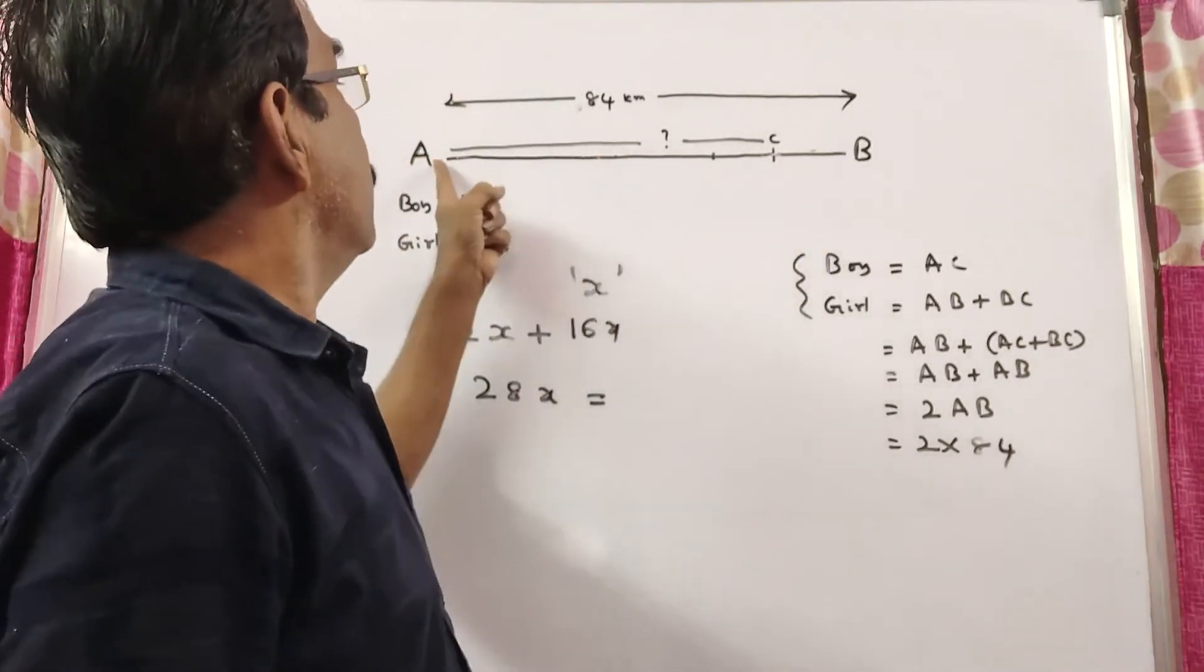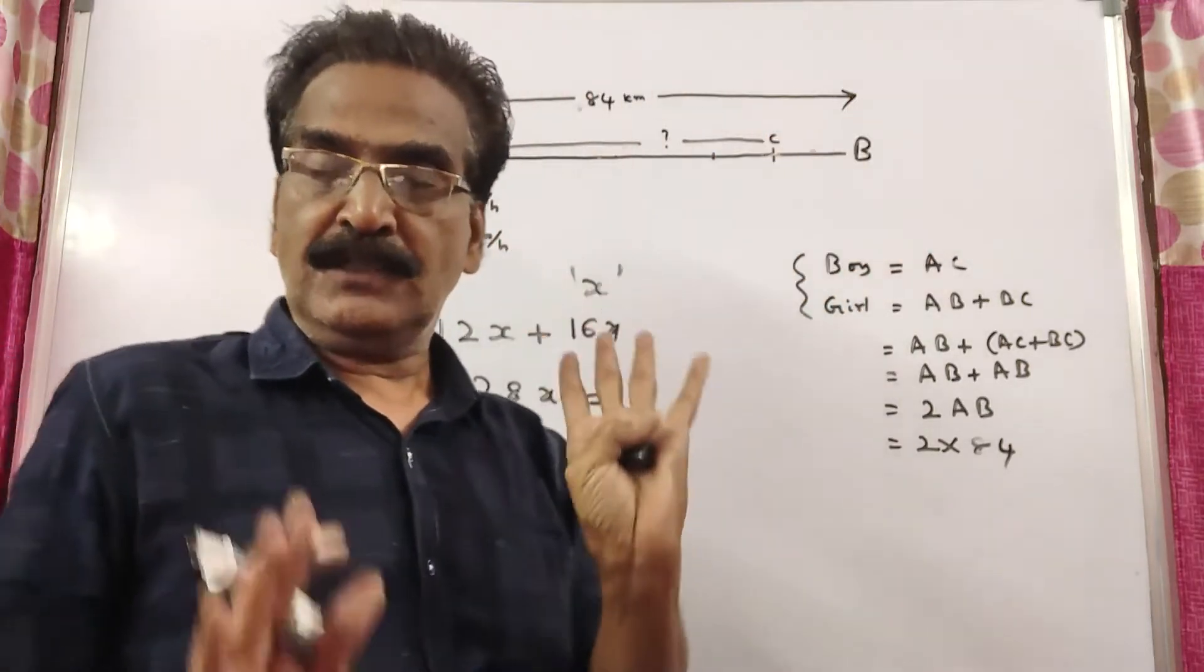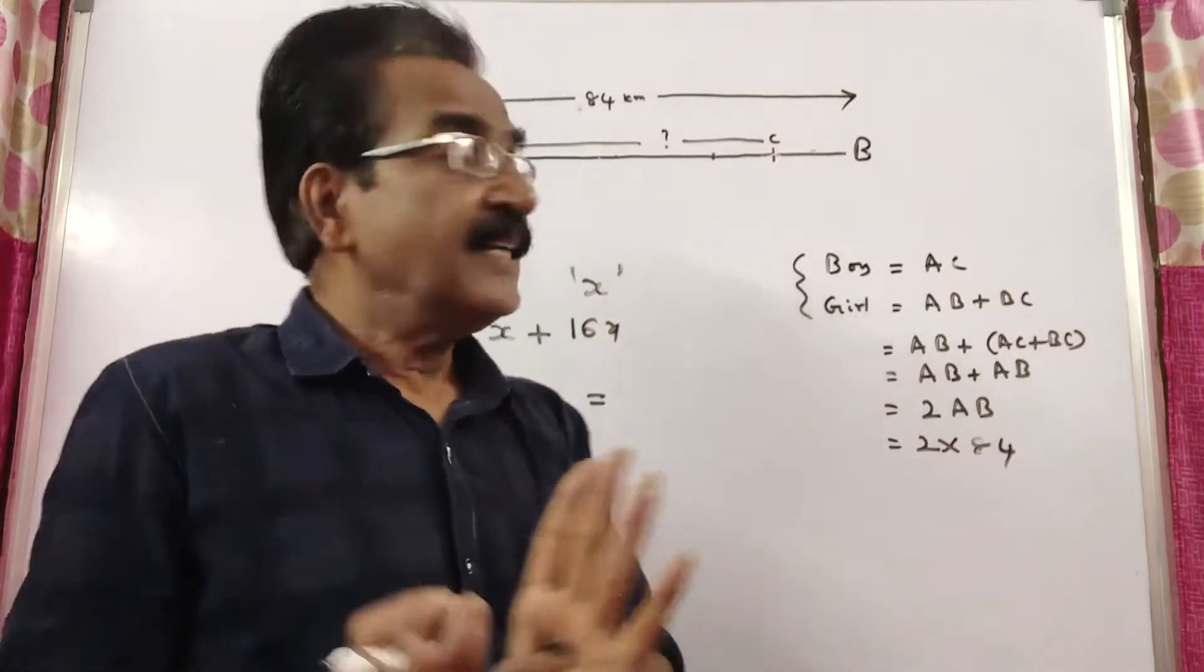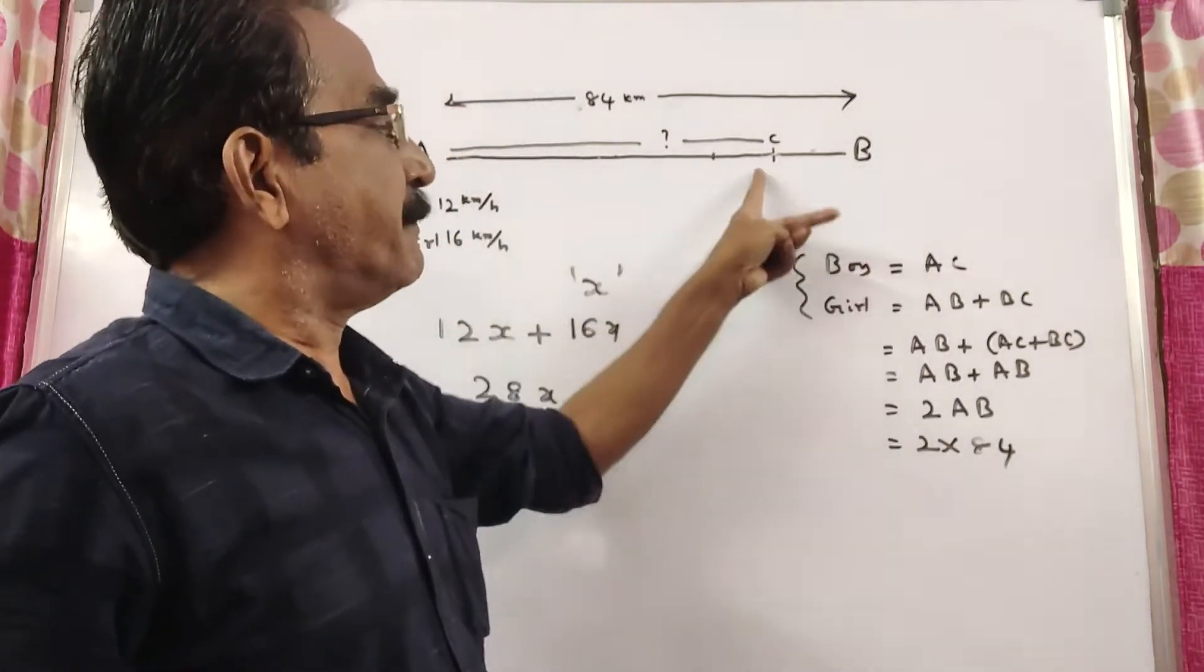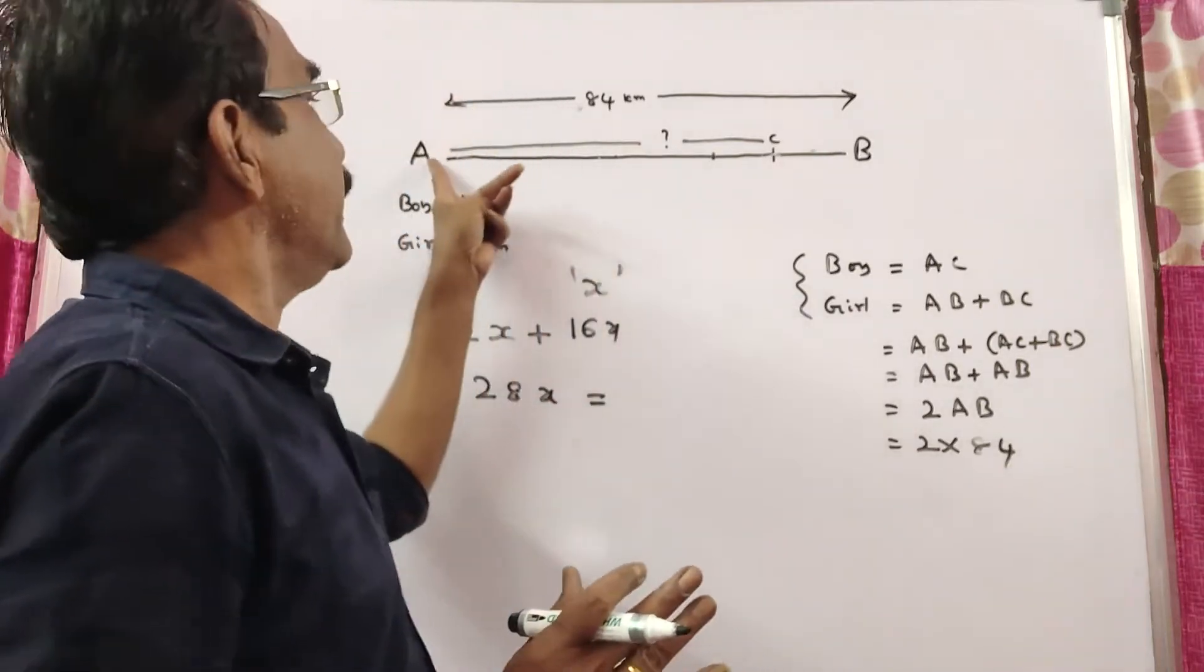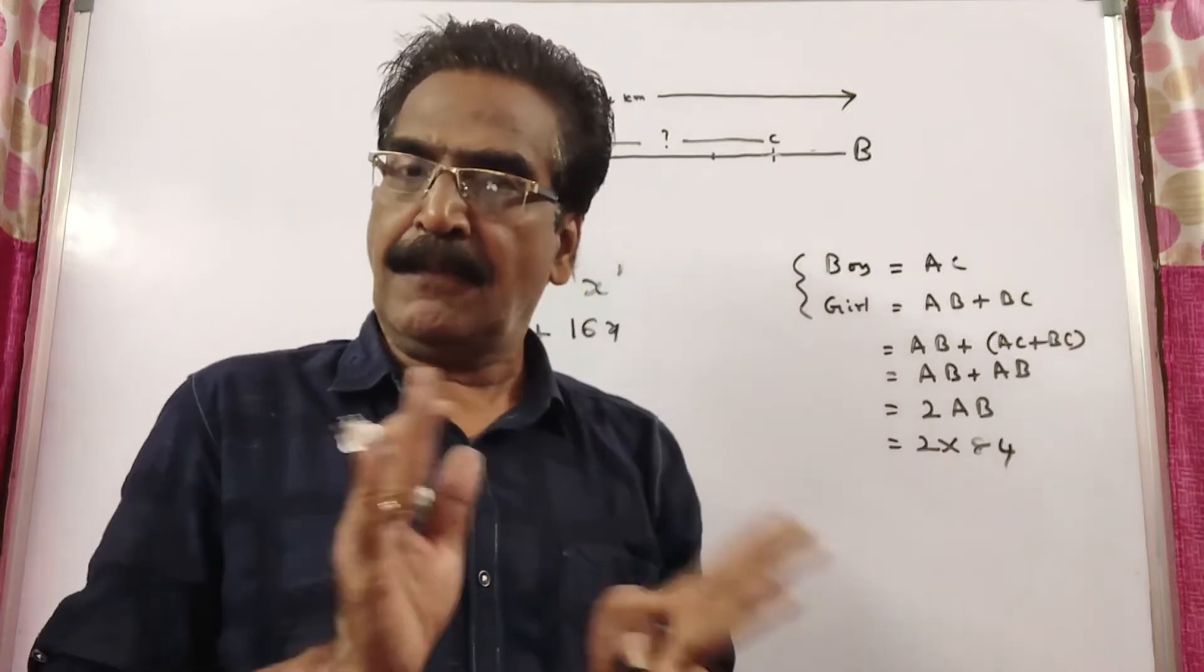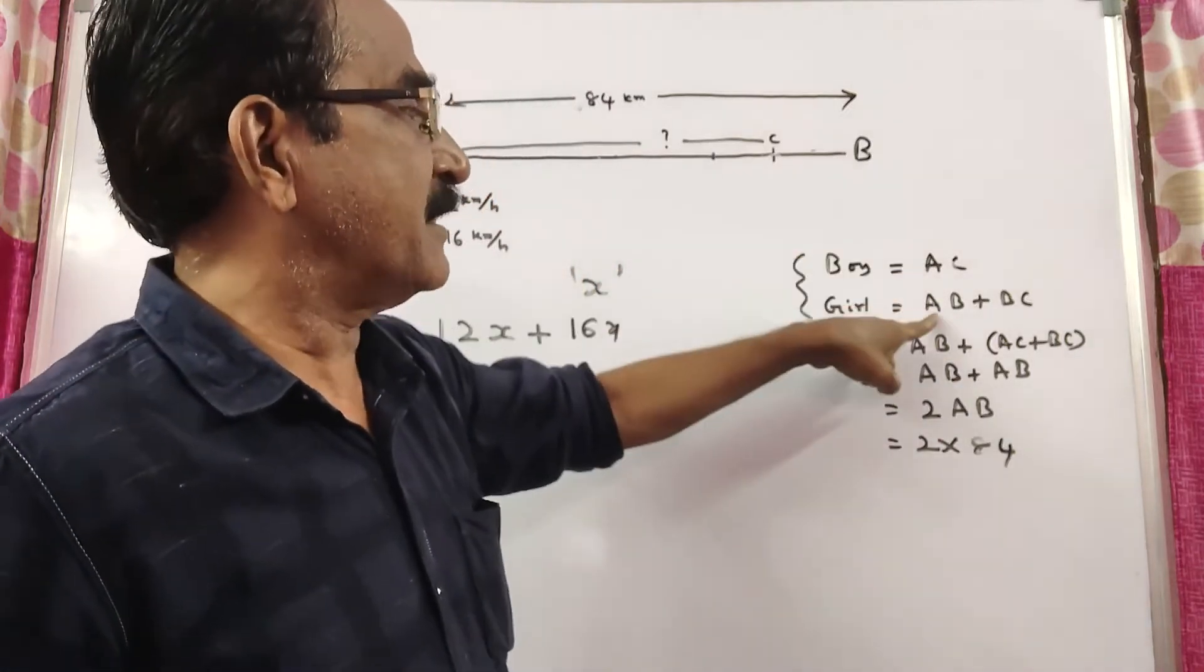The girl travelled from A to B and B to C, so her distance is AB plus BC. The boy's distance is only AC. The total distance travelled by both is this plus this.